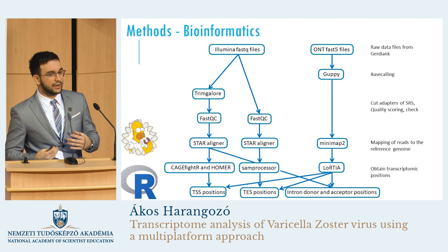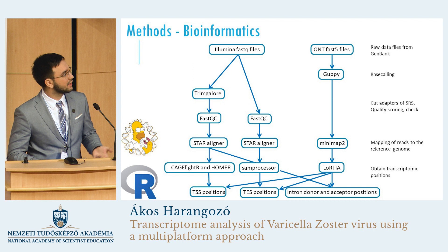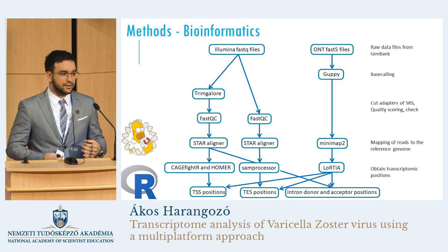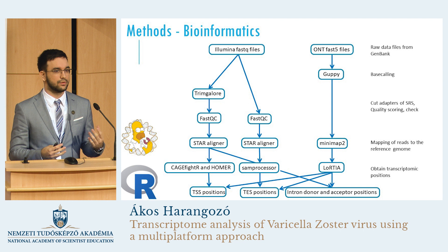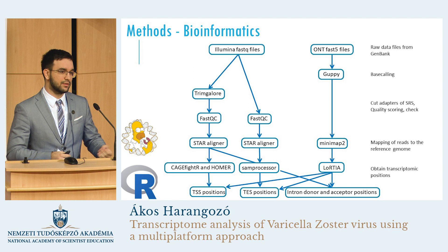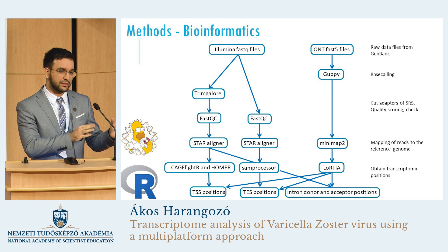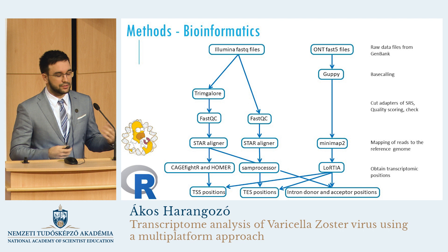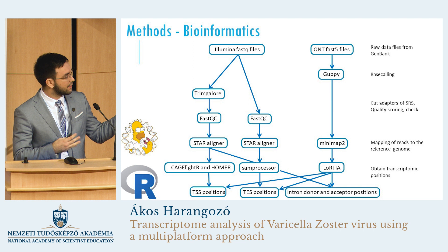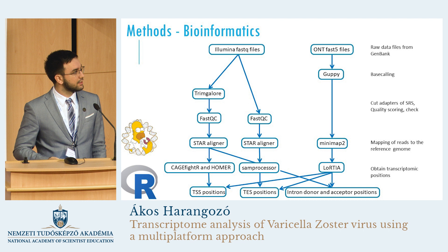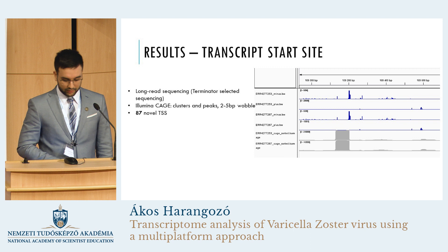This is the main part of our study. With the help of bioinformatics, we can analyze our sequence data. The main steps are: first, base calling, which means interpreting the signal into a nucleotide sequence; then mapping, which means we separate the virus's transcripts from the infected cells' transcripts and align the virus transcripts to a reference genome. Finally, we obtain transcriptomic positions with the help of different software, including transcript end-site position, transcript start-site position, and internal positions. For handling and analysis, we use RStudio and Excel.